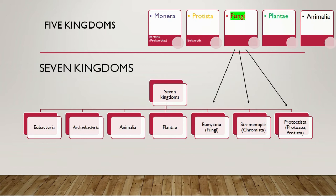In the seven kingdom classification, we have Eubacteria, Archaebacteria, Animalia, Plantae, Eumycota (which is true fungi), Straminopila or Chromista, and Protista or Protozoa. The organisms which were in kingdom Fungi have now been kept in three different kingdoms: Eumycota (true fungi), Straminopila or Chromista, and kingdom Protista or Protozoa.